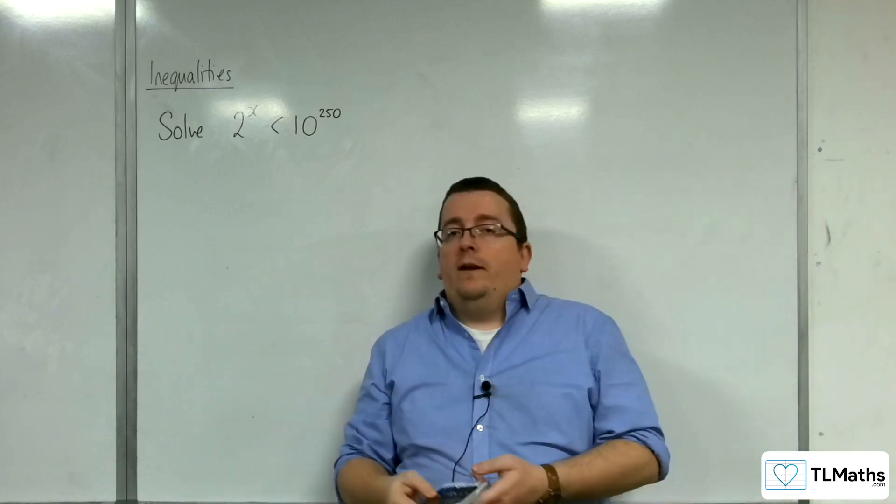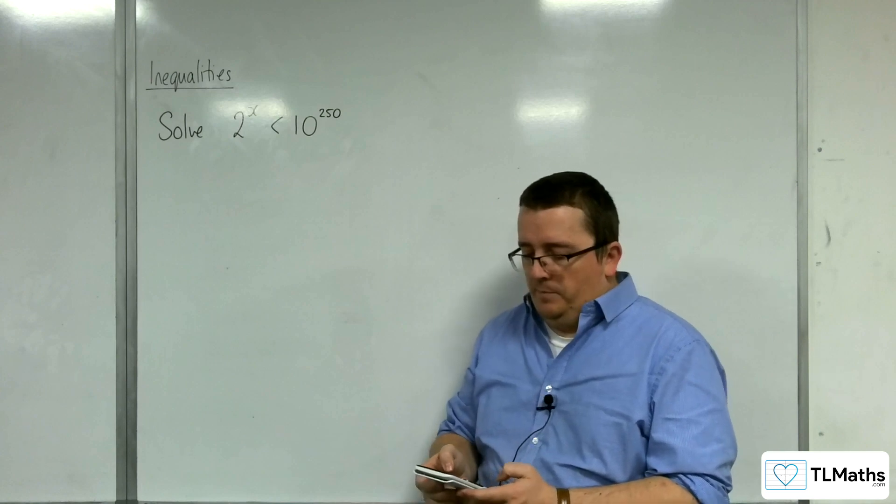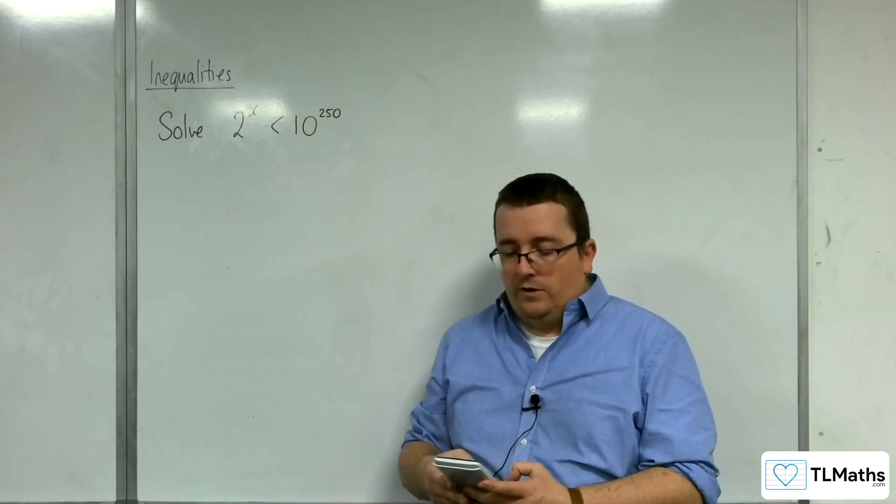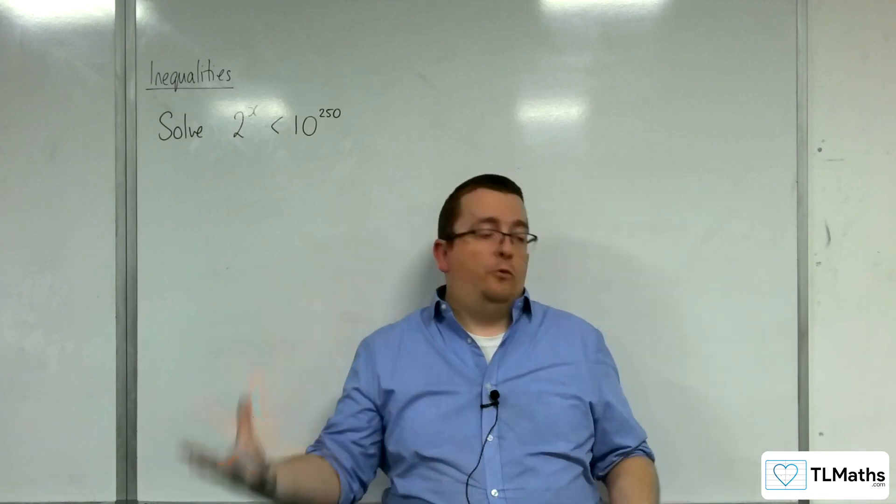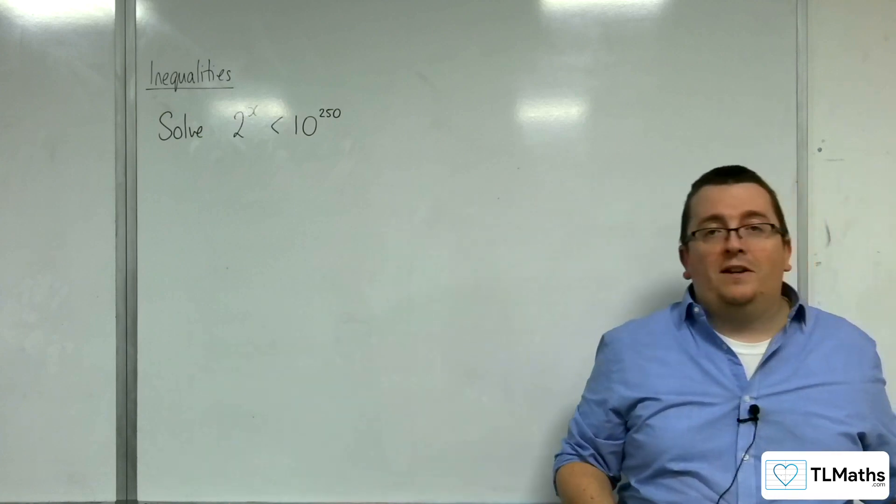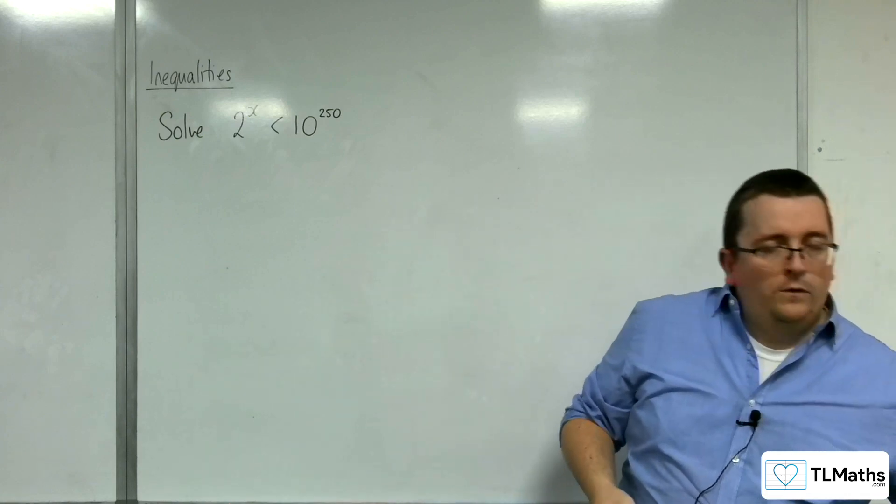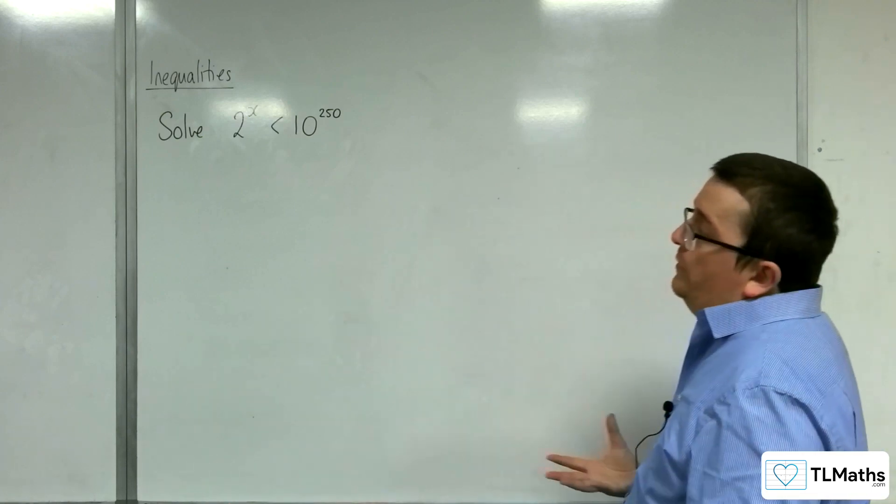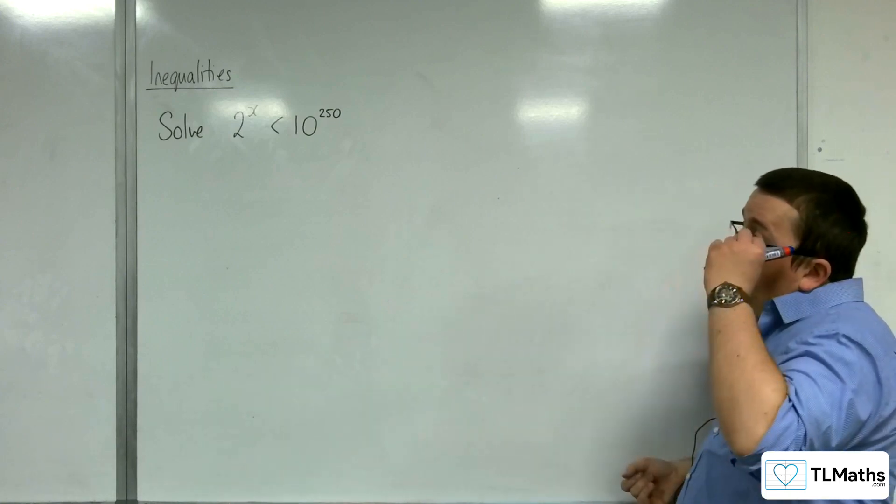Now, just to be clear, if you try typing in 10 to the power of 250 onto your calculator, you're going to get a math error. The number's far too big for your calculator to be able to deal with it. So how are you going to go about solving this inequality?